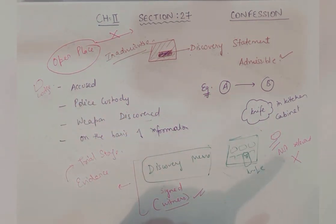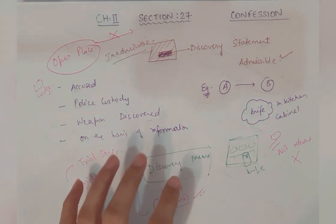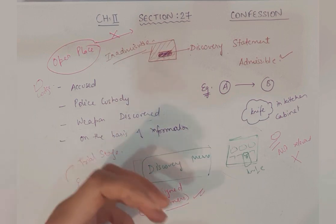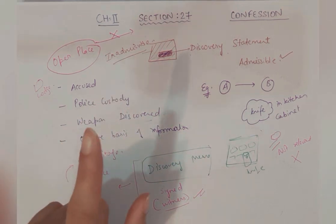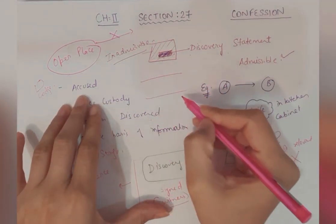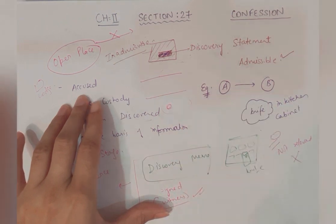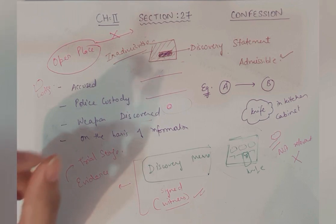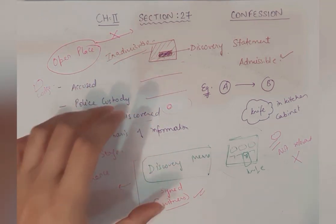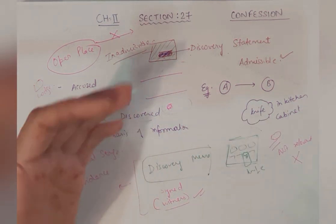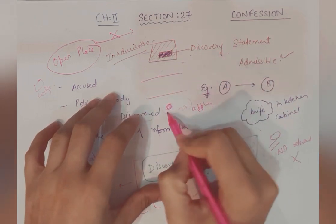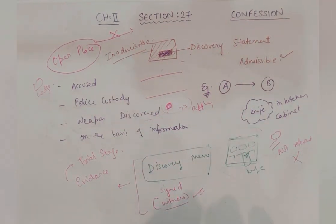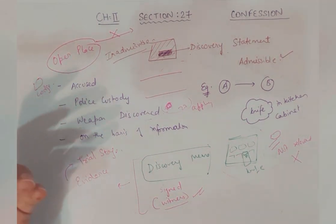Another case: Nisar Khan versus Uttarakhand. A confessed and gave a discovery statement to the police. A told that the murder weapon is hidden at the bank of a river — which is also an open area. A pinpointed, and when police went there, he pointed to a particular place — 'yahan par hai.' Now, the murder weapon was in an open area but hidden beneath sand and stones — oopar mitti aur stone se dhaka hua tha. Therefore, the object was hidden. So Section 27 will apply here because he pointed to that particular area, and in that area the weapon was hidden beneath stone and sand — nobody could see it. So Section 27 will apply.